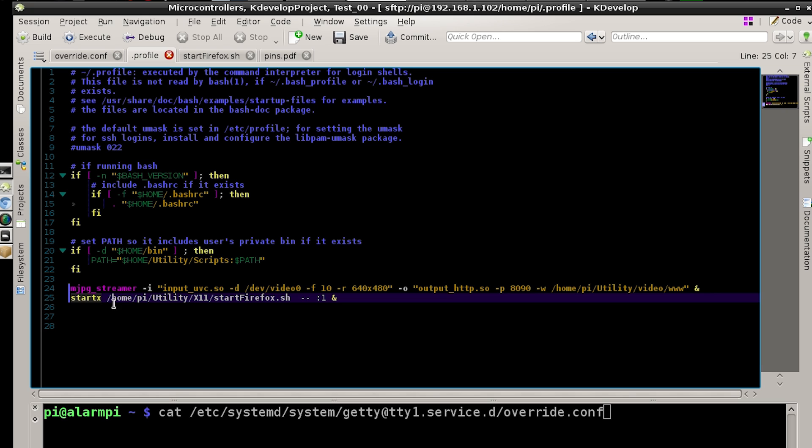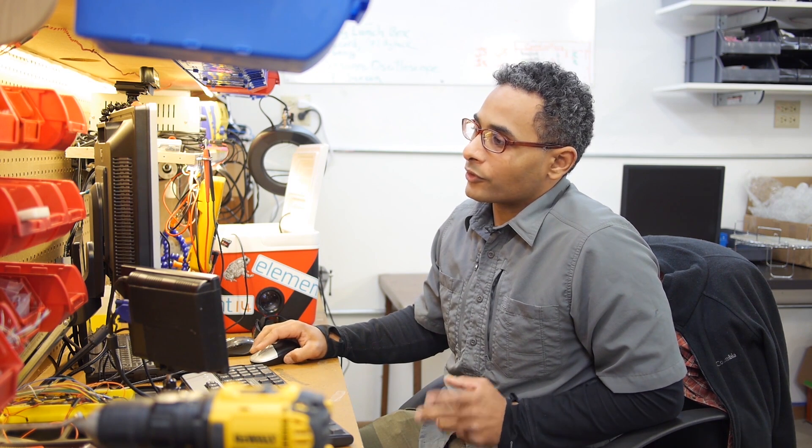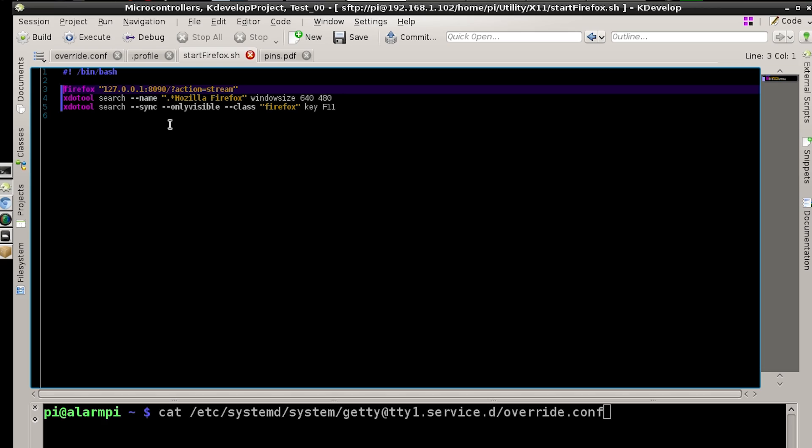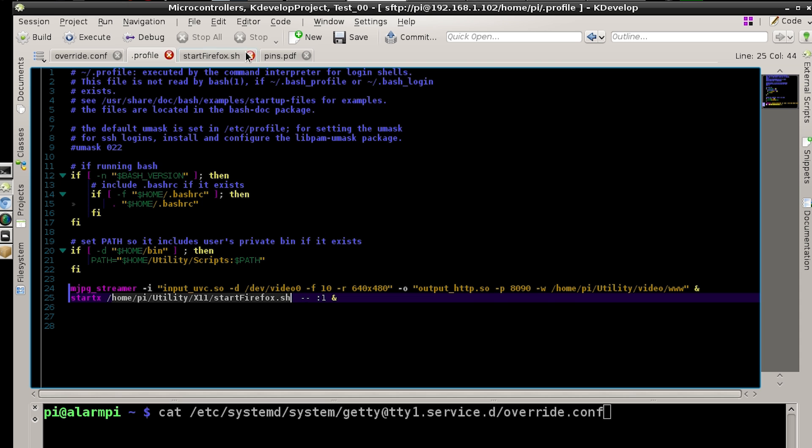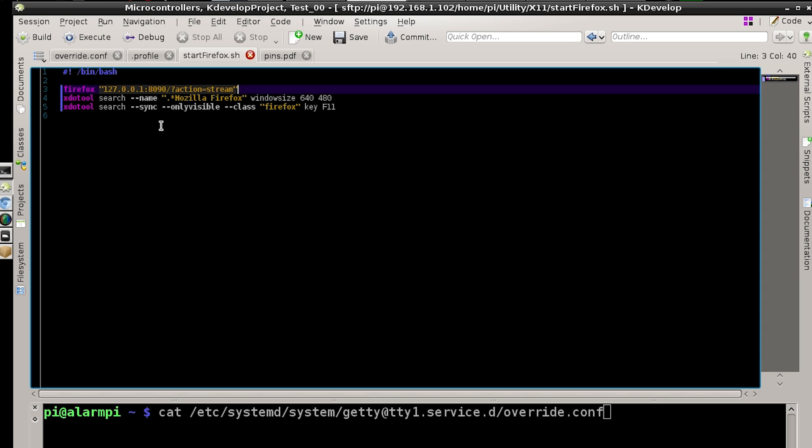and then it starts MJPEG streamer with this line of code here. And then it sends that process into the background. Then it starts X with this script, which is start firefox.sh. Because MJPEG streamer is going to be streaming the video to the network in order to view it on the Raspberry Pi. In the monocle, what I want to do is open Firefox and make it full screen. So there's not going to be any other services or tools or utilities or desktop environment running at all. Just this plain X11 server with Firefox. So then the start firefox.sh script will open when start x goes and then dash dash colon one end, which stores it in the background. When Firefox opens, it loads up this URL, which is the local host at port 8090 and then forward slash action equals stream so that it will view the video.